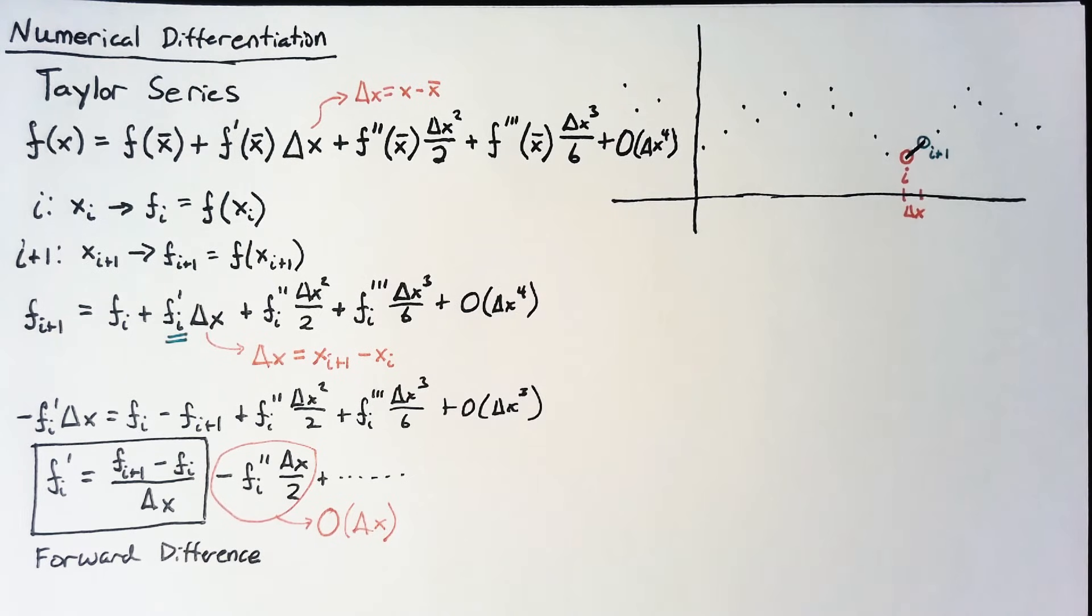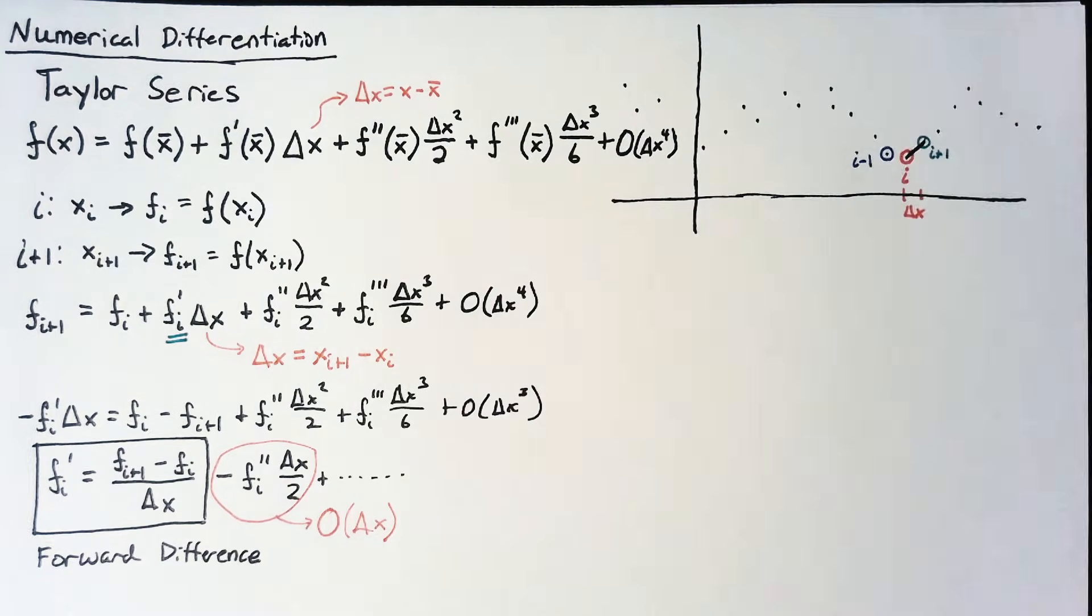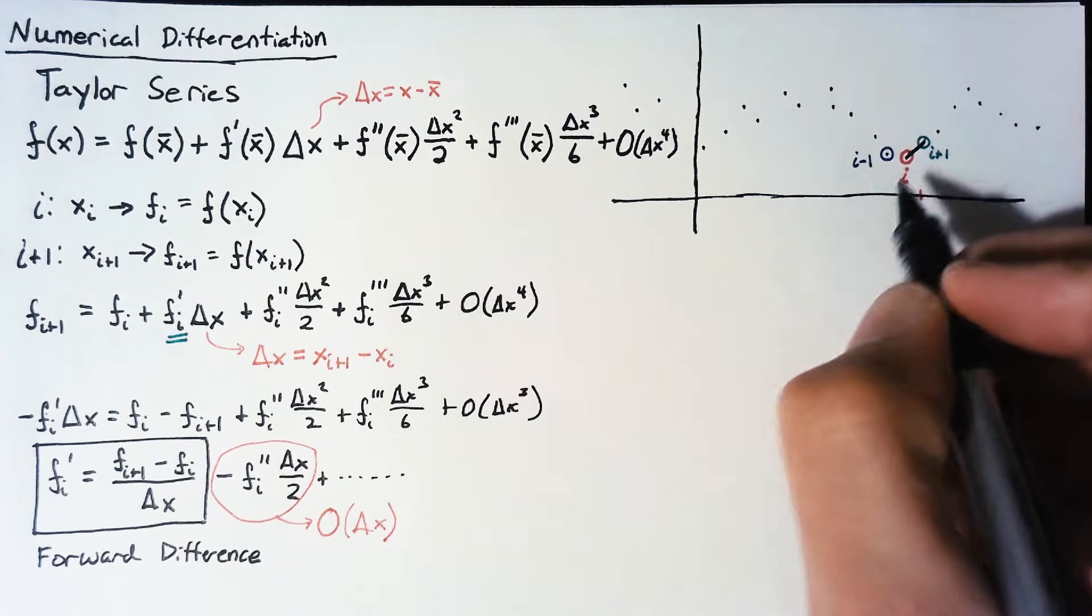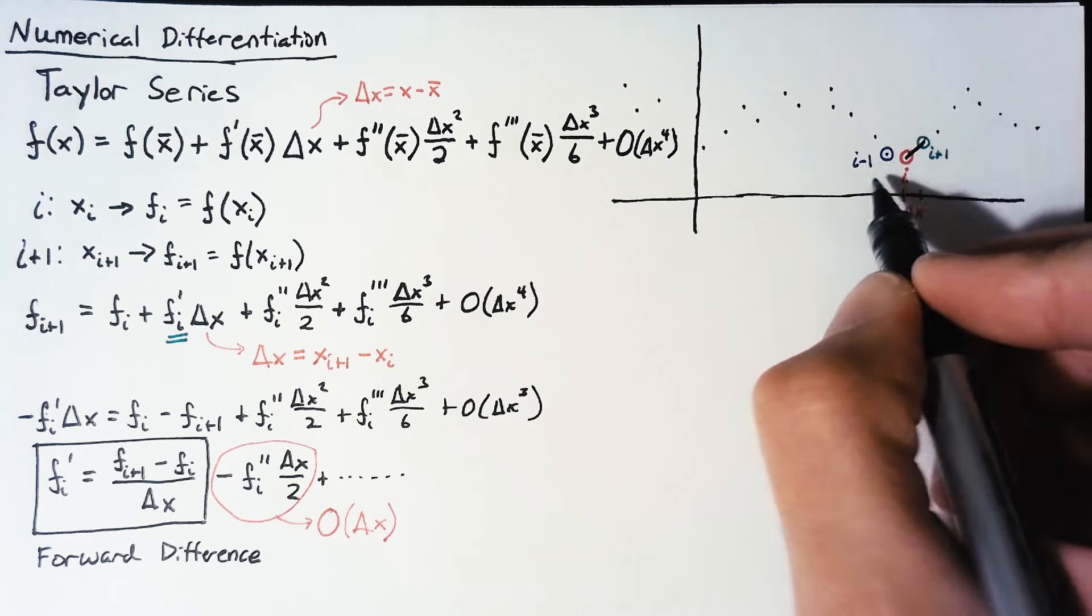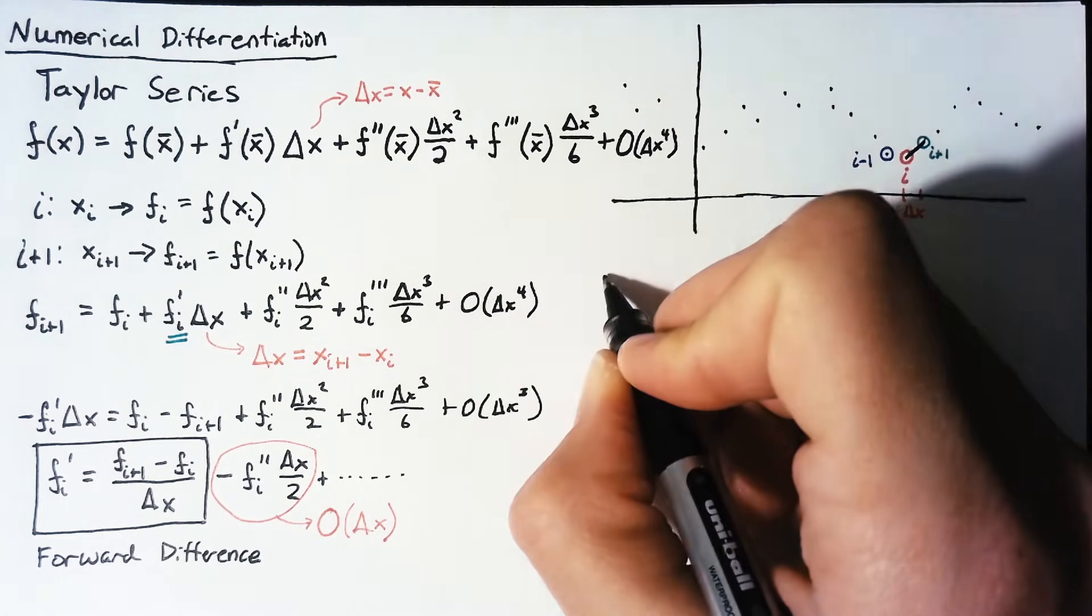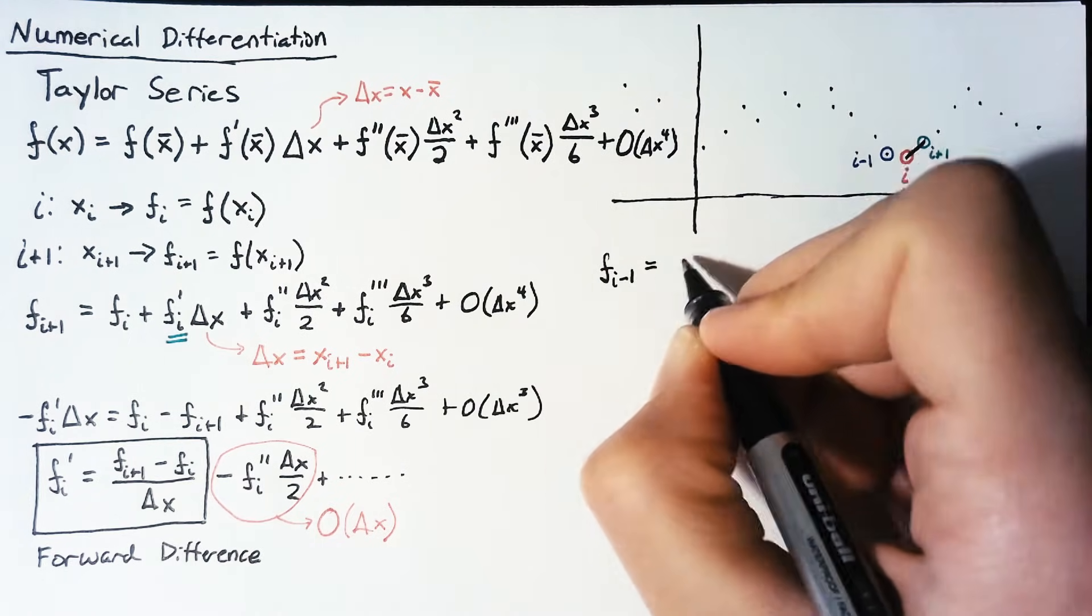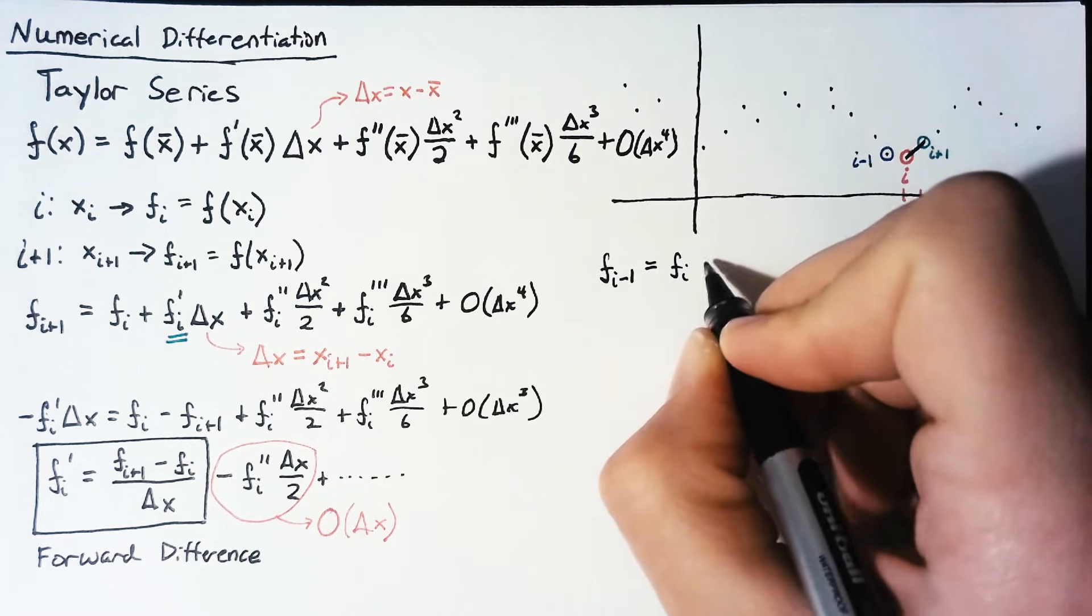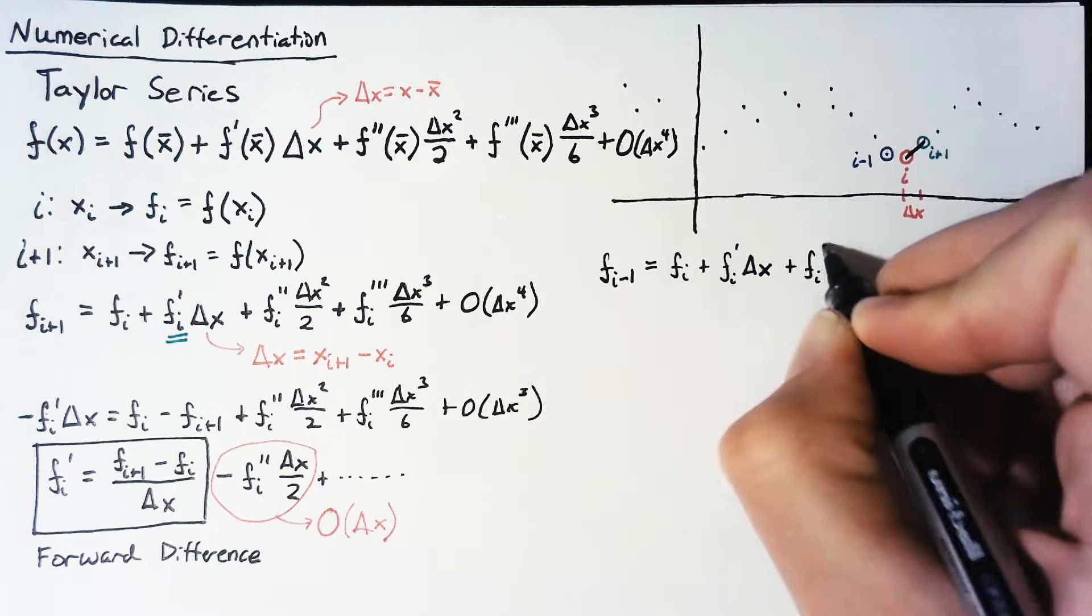Now, this is not the only way to tackle this problem. The next most obvious way is instead of using i plus 1, we could also use the point to the left, which we would call i minus 1. So let's write out the Taylor series for xi minus 1. What we end up with is an fi minus 1, which is going to be equal to f of i plus fi prime times a delta x, so on and so forth.